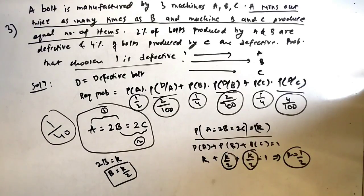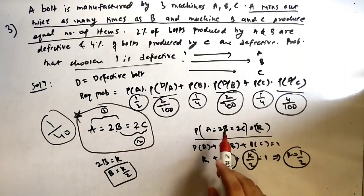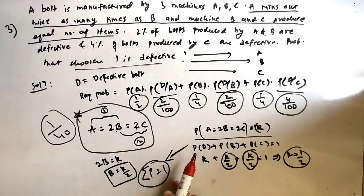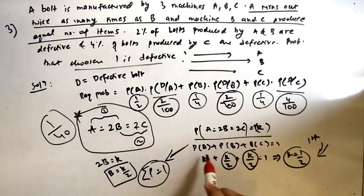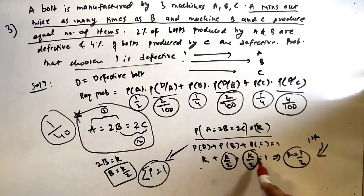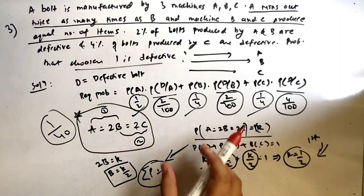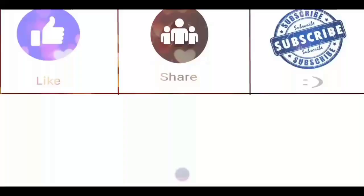To summarize: the key condition was A = 2B = 2C. We used the logic that all probabilities sum to 1, found k = 1/2, then got P(A) = 1/2, P(B) = 1/4, P(C) = 1/4. Plugging in gives the final answer of 1/40. If you like this video, please like, share with your friends, and subscribe to my YouTube channel. See you in the next video — take care, this is Shranik Jain, peace out.